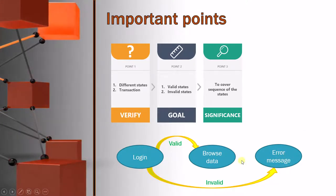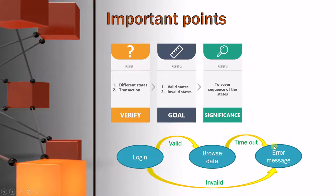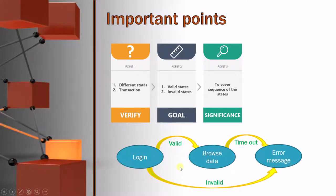There could be one more state or one more event. When you are browsing the data, timeout happens. You are not doing anything, you are idle. In that case also, you may come out of the browser and that will also result in error message. So these are the different states and that is how you transact between these states.